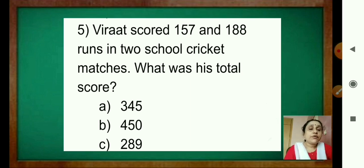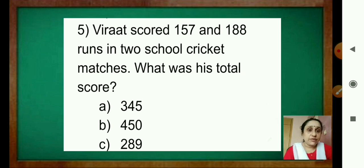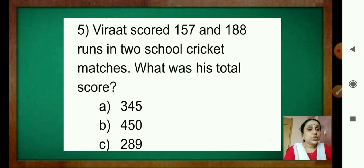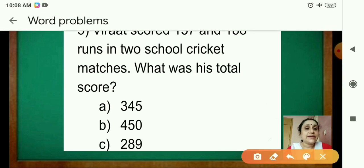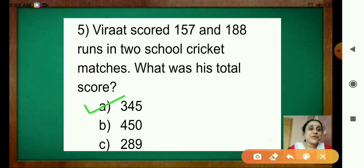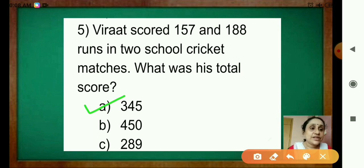Virat scored 157 and 188 runs in two school cricket matches. In the first match he scored 157, and in the next match he scored 188. What was his total score? Add these two numbers — the correct answer is 345. Finish your word problems and solve all the sums in your book and notebook. For the maths activity, do the rough work and then tick the correct option.